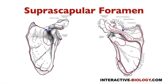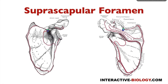Traversing that notch, going across from one end to the next, we have a ligament called the transverse scapular ligament. That is the first gateway to get to the posterior scapular region — the suprascapular foramen. In terms of the contents of that foramen, one thing would be the suprascapular nerve, coming through that foramen to get to the posterior scapular region.